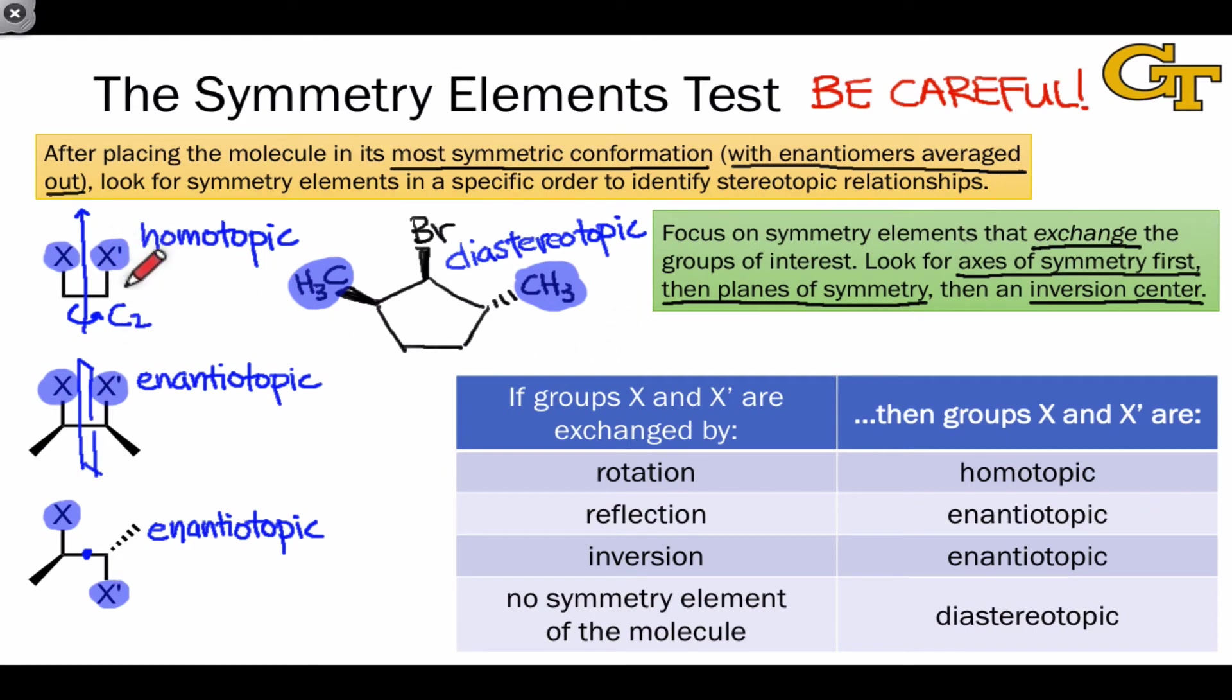For example, if you miss that a molecule has a rotational axis of symmetry, you might conclude that two groups are diastereotopic when they're actually homotopic. If you see a plane of symmetry in a molecule that isn't really a plane of symmetry, in the sense that it changes the appearance of the molecule in some way, you may conclude that two groups exchanged by that plane are enantiotopic, when in fact, they're diastereotopic.